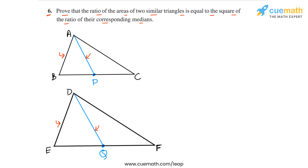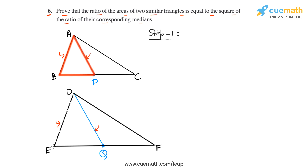Let's write out this reasoning step by step. Step one is to show that AP by DQ, the ratio of medians, is equal to AB by DE, the ratio of sides. For this purpose, let's compare triangle ABP with triangle DEQ. Let me highlight: triangle ABP is this triangle here, and triangle DEQ is this triangle.